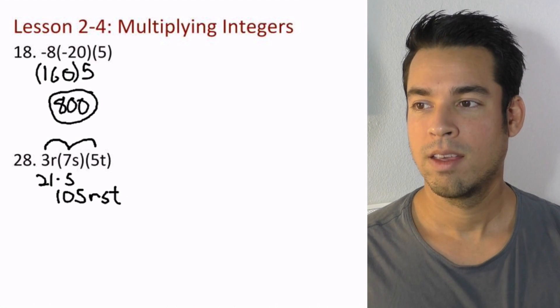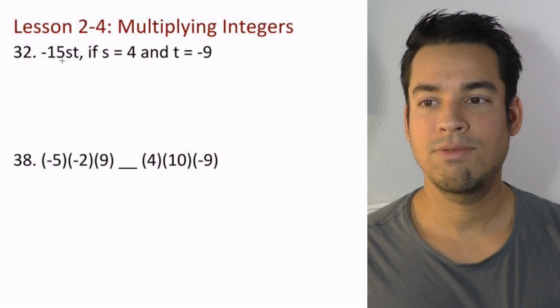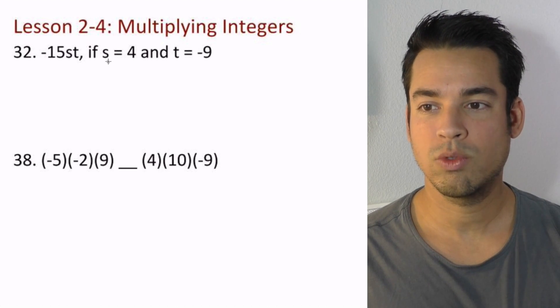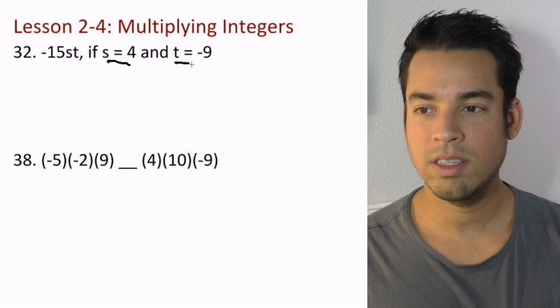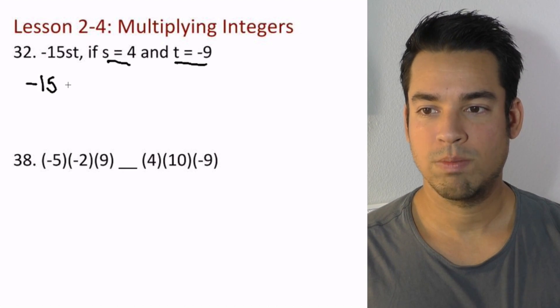Now let's go on to problem 32: -15st if s equals 4 and t equals -9. Here I'm going to plug and chug. I'm just going to plug in the values. We've got a 4 there, we've got a -9 here.